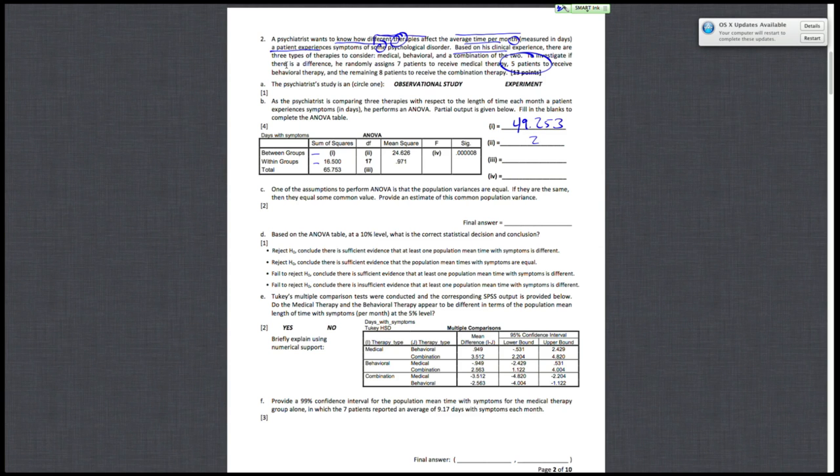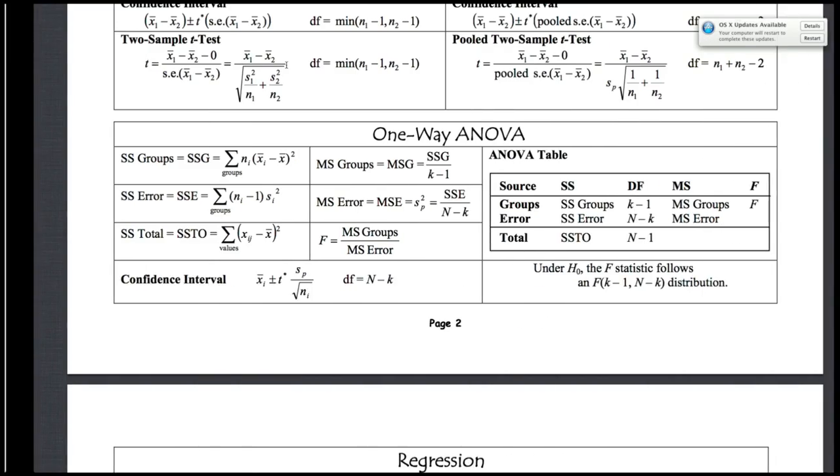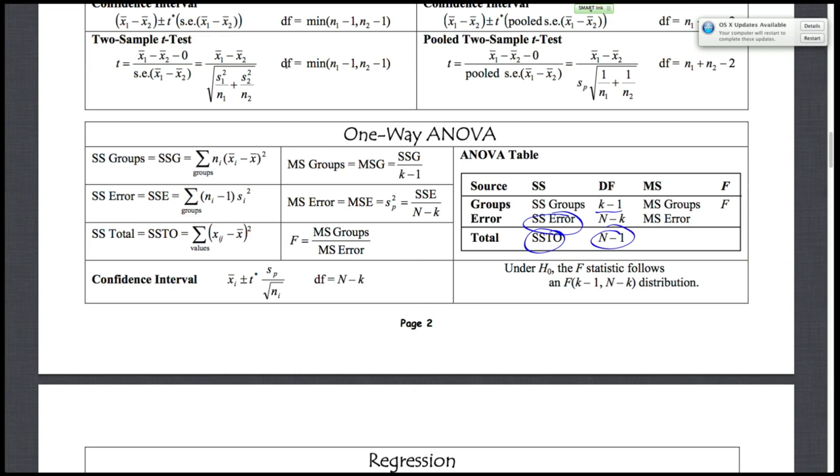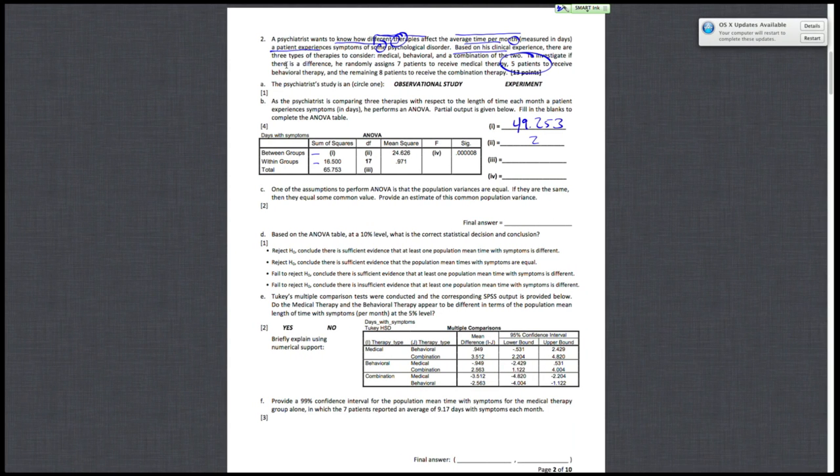And then total is going to be our total sample size minus 1. I can see that on the formula card. Degrees of freedom, total sample size minus 1. And we had 7 who received medical therapy, 5 who got behavioral, and 8 to receive a combination. So 7 and 8 is 15, plus 5 is 20. 20 minus 1 for our degrees of freedom is 19.